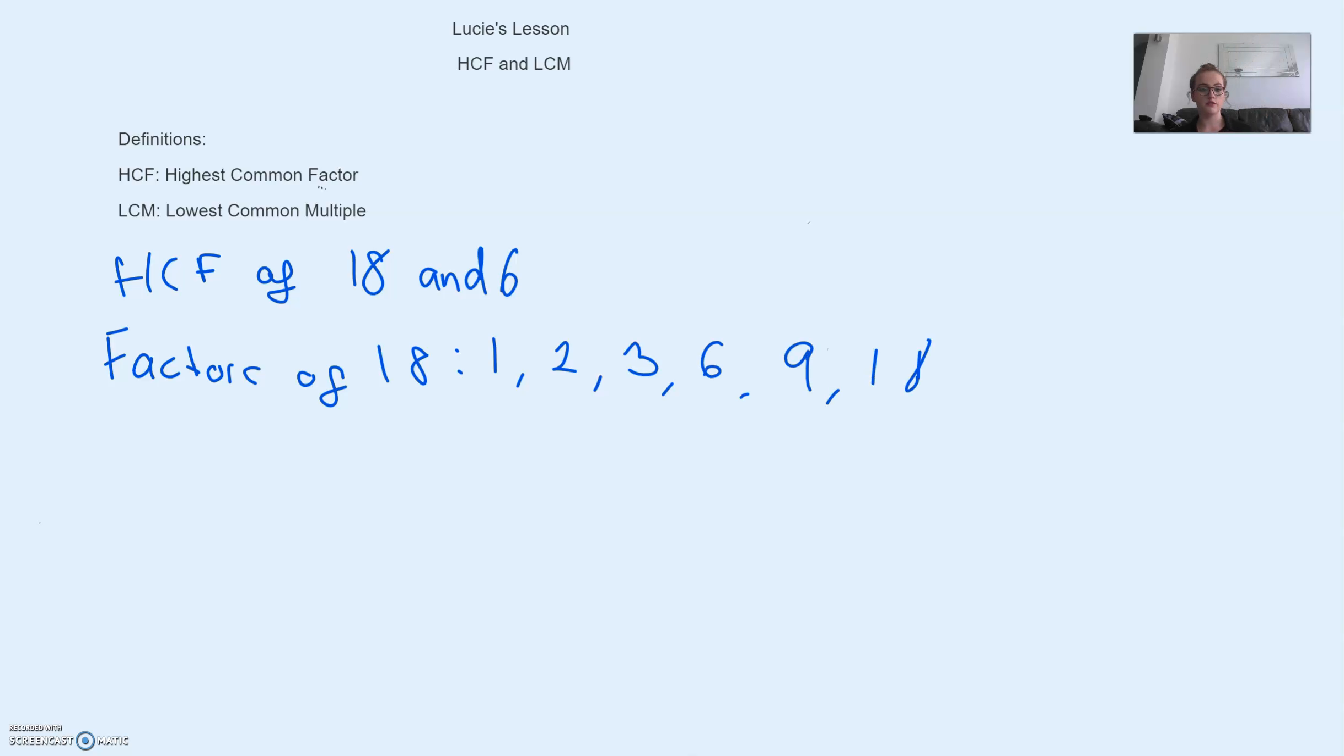We can quickly recall that if something is a factor that means 18 is divisible by it. So 18 is divisible by all of these numbers and no others. I'll give you a few minutes to check that you can confirm there's no more factors of 18. And then we can write down the factors of 6, which would be 1, 2, 3 and 6.